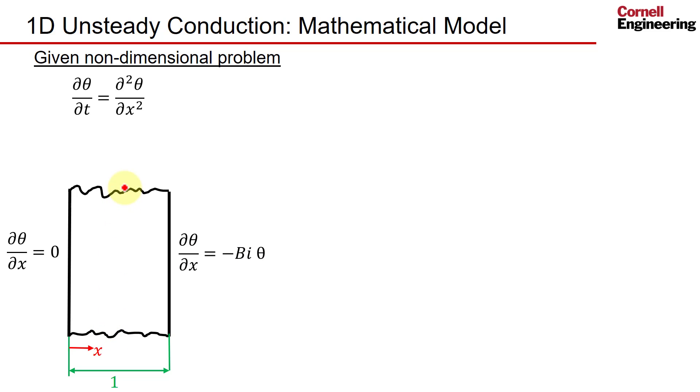There's no variation in this direction, so there are no boundary conditions on these boundaries. Because this is a time-varying problem, it's an initial value problem, so you not only need boundary conditions but also initial conditions. Initially, we assume that the non-dimensional temperature theta is 1 everywhere.